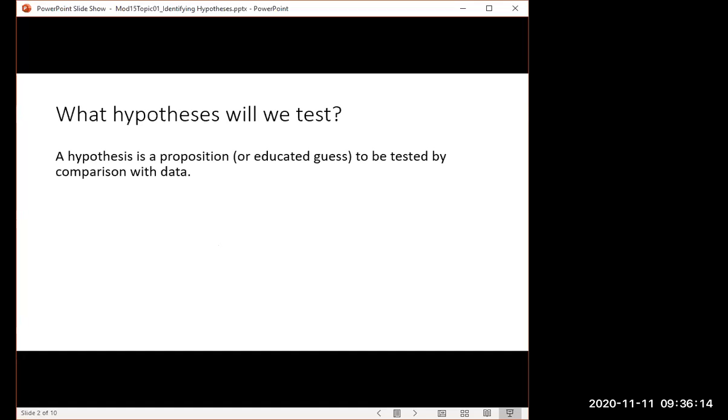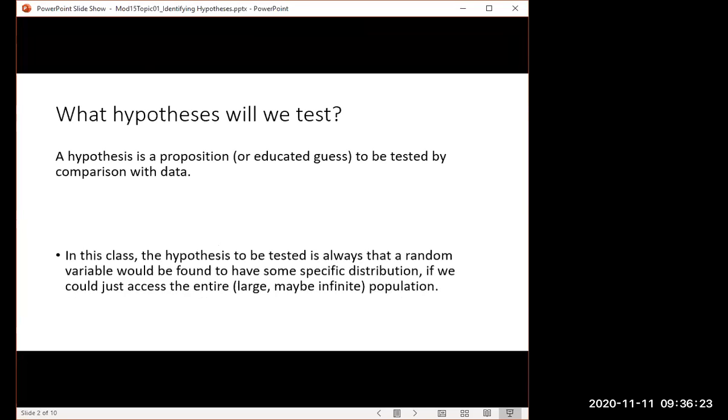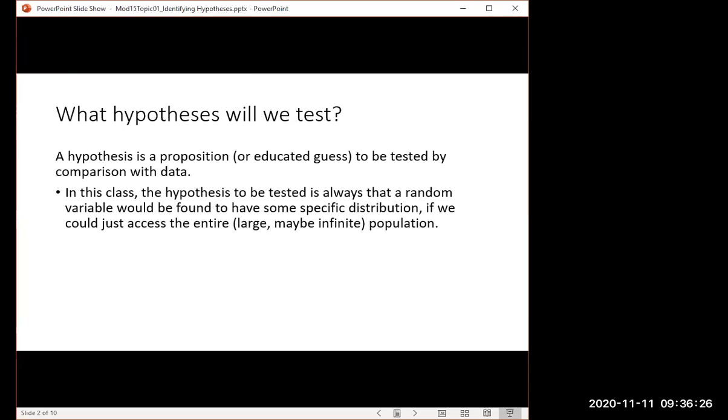In general, a hypothesis is just a proposition or an educated guess that's to be tested by comparison against data. In this class, the hypothesis to be tested is always just that a random variable would be found to have some specific distribution if we could just get access to the entire population. Maybe the population's infinite. So it's an educated guess or a theory about what the distribution would be. We're limited to that. We can only have these guesses because we do not have access to the entire population.